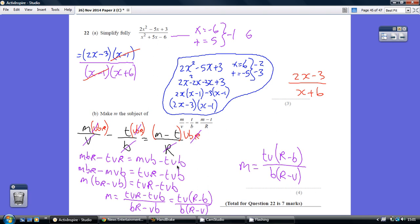We then rearrange to get both the terms which have got M in them on the one side, and those without M on the other side. I've had to take away MVB, but add TVR to get from here to here.